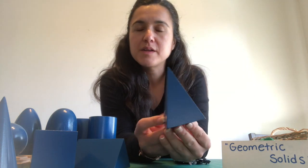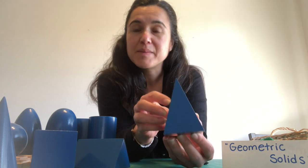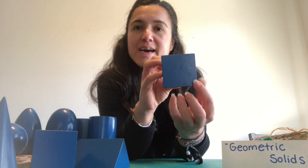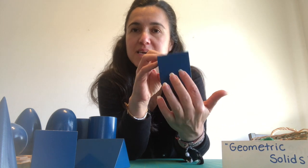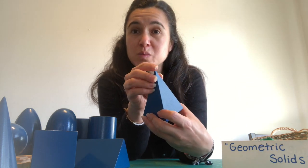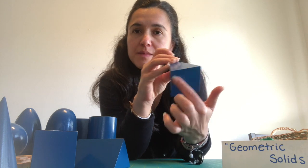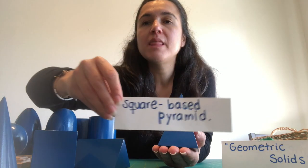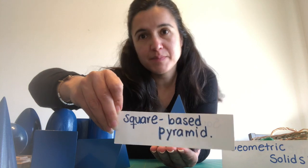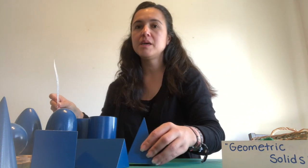What do you think it looks like? Like a pyramid. But guess what — it has a square base, super pointy. So the name of this geometric solid is square-based pyramid. And I'm going to put it right there.